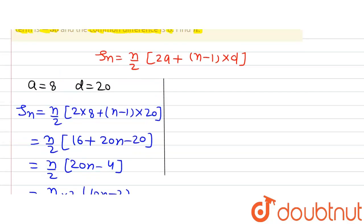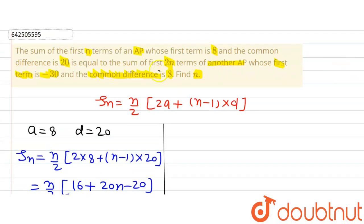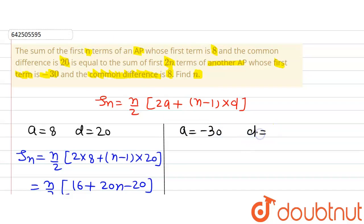Now let's move to the other AP. The other AP has first term minus 30 and common difference 8. So a is minus 30 and d is 8.